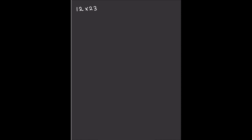For 12×23, we lay it out with 12 on top and 23 below. First, multiply vertically: 2×3 = 6, write that on the right; and 1×2 = 2, write that on the left, leaving a gap in the middle. Now multiply diagonally: 3×1 = 3 and 2×2 = 4. Add those products together: 3+4 = 7. Put the 7 in the middle. The answer is 276.